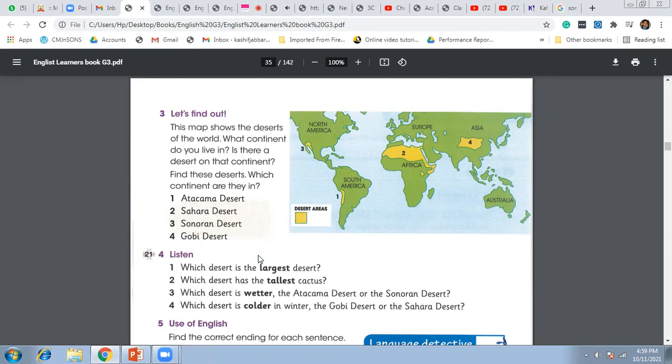The Sonoran Desert is in North America. Like all other deserts, it is a dry place, but there are a few heavy rainfalls in the summer and in the winter. The Saguaro cactus plant, the tallest cactus on Earth, grows in the Sonoran Desert. A Saguaro cactus can grow as tall as a six-story building.